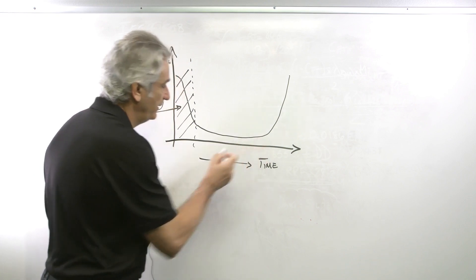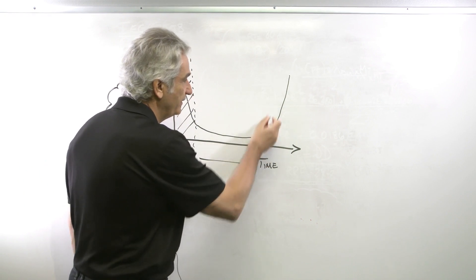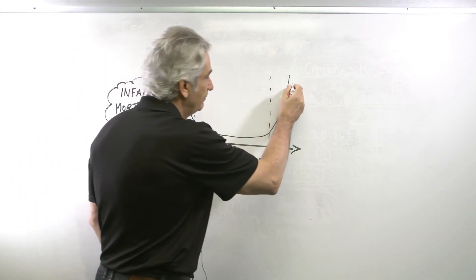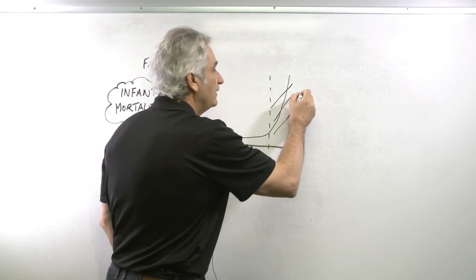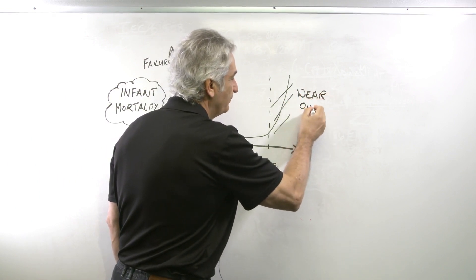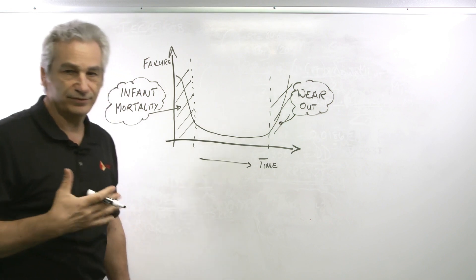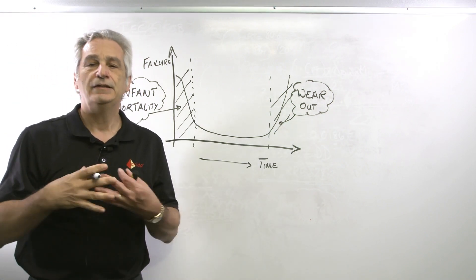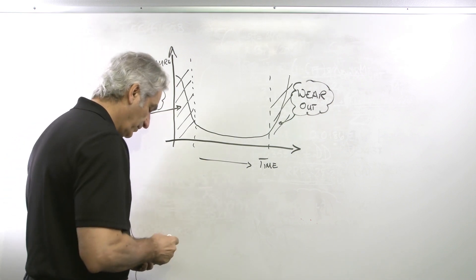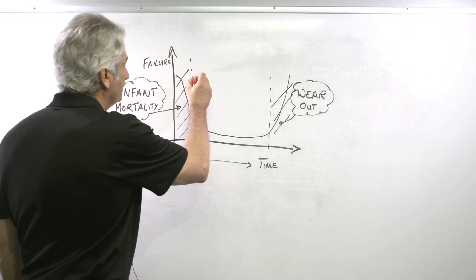After the burn-in phase, we sort of flatten out over time where the failure rates tend to be more or less constant, and then at some point in the future they start to ramp up again. This part is known as wear out — where eventually the normal stresses and strains of the environment and operation overcome the strength of the product and it eventually wears out.